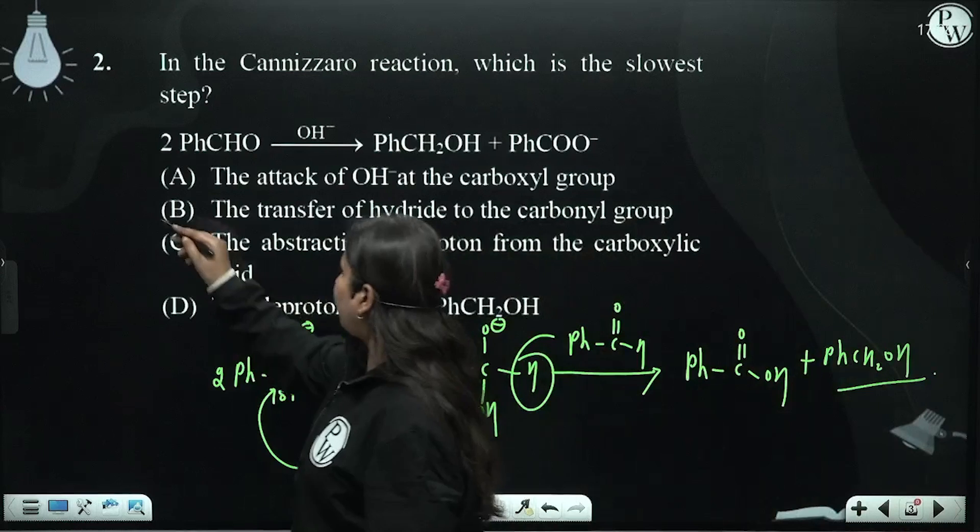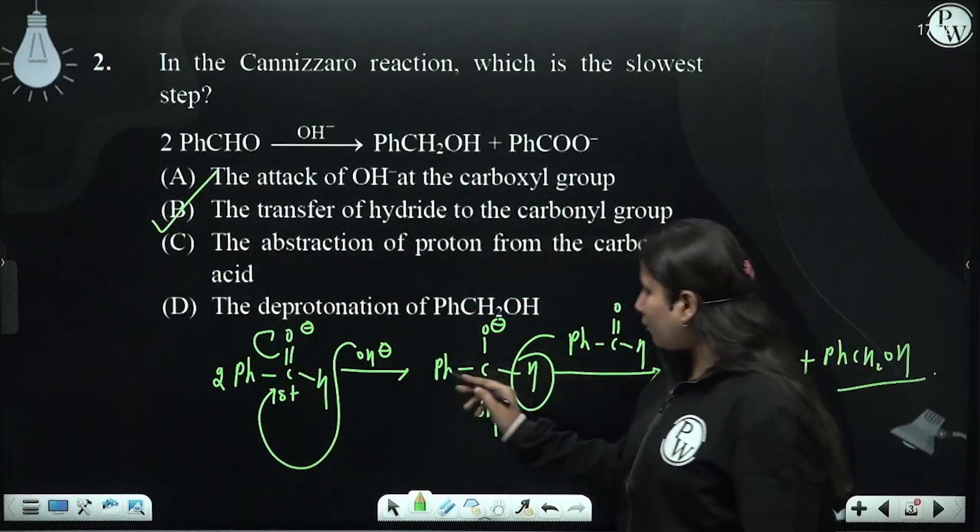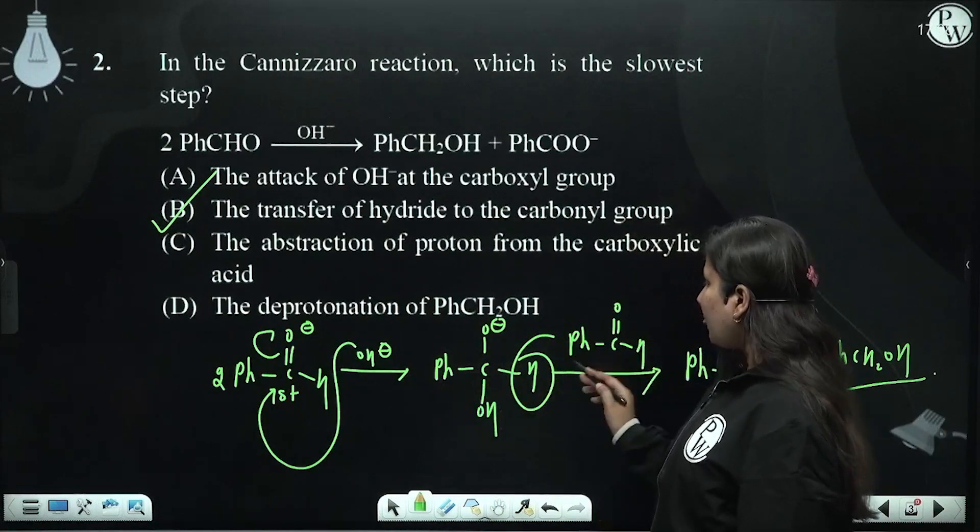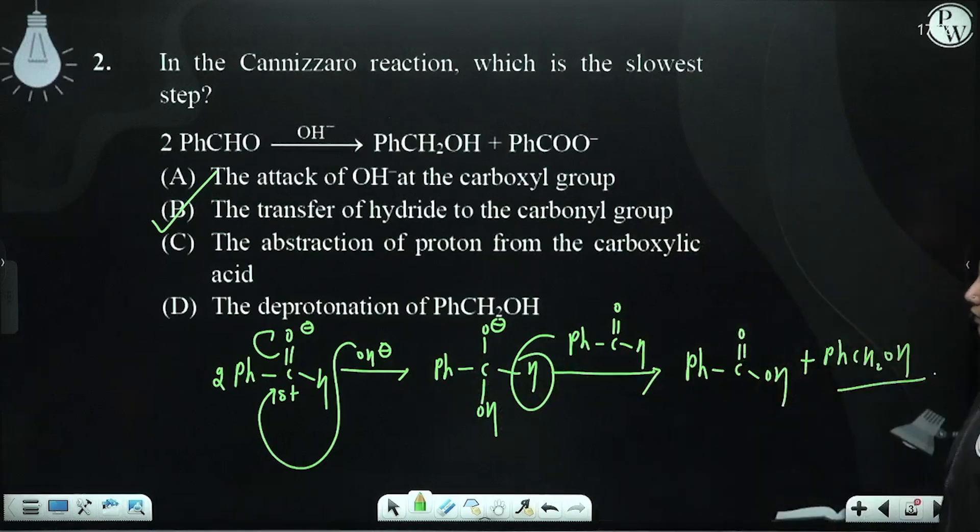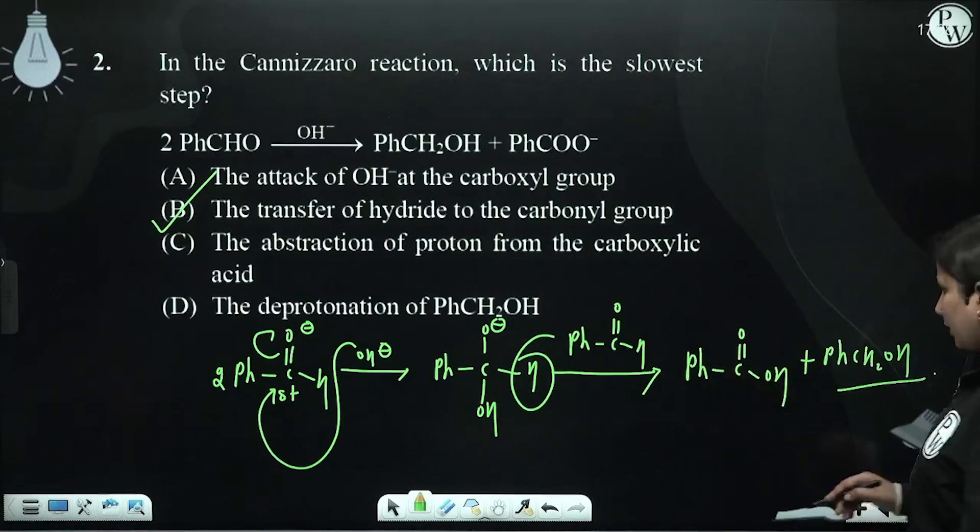The transfer of hydride to the carbonyl group - this step is the slow step. That is the slow step in the reaction. The transfer of hydride is slow, so the right answer will be option B.